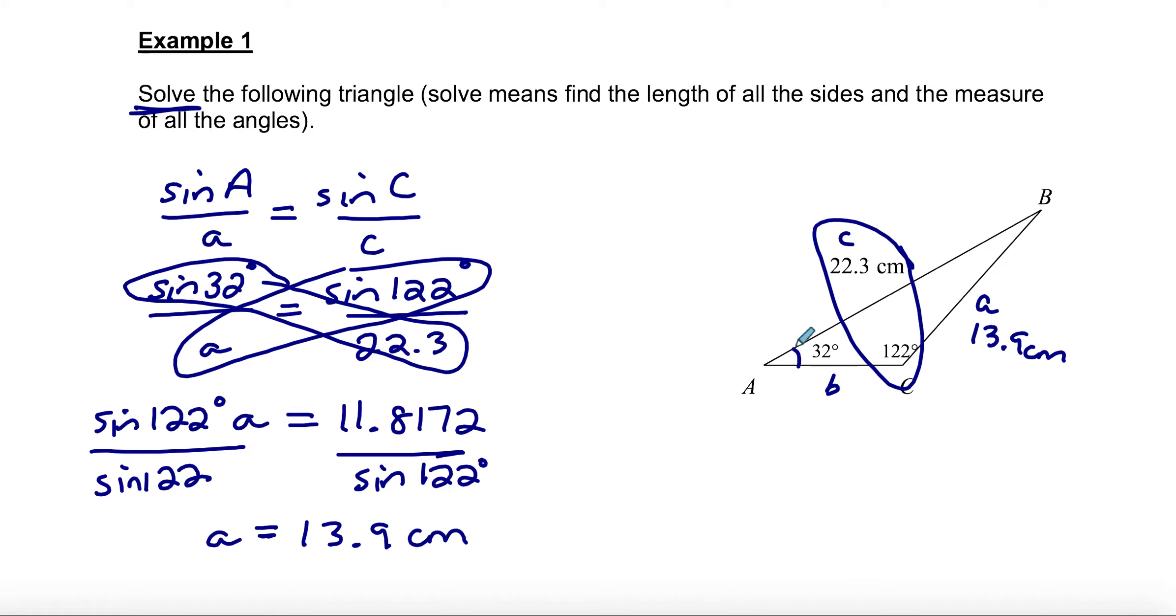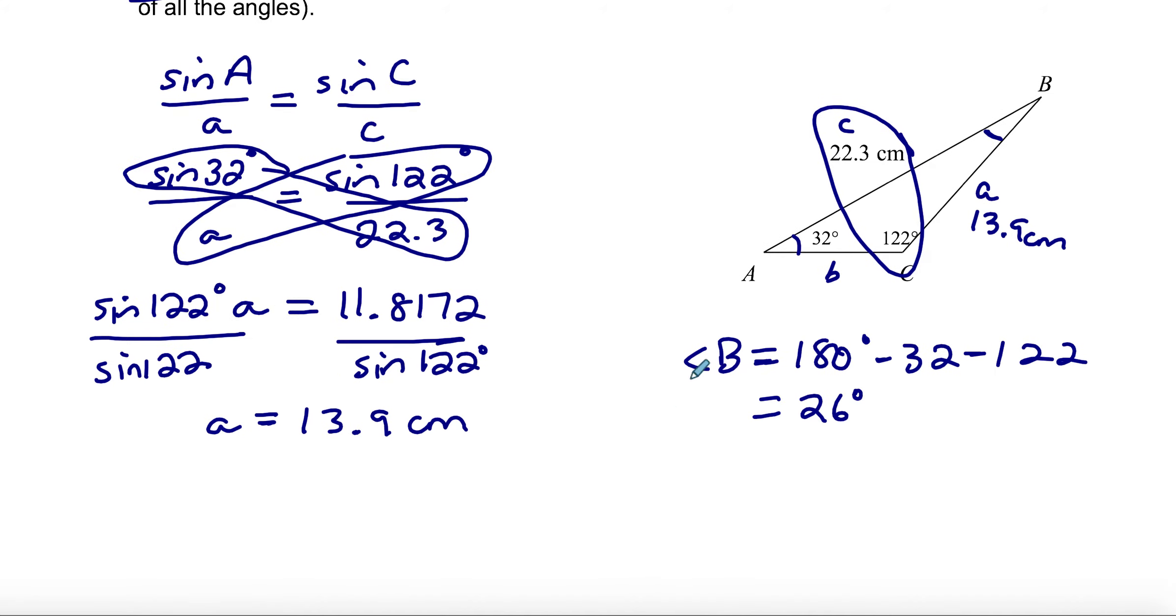Something else we could find: if we know two angles, it'd be really easy to find angle B. So angle B is going to be 180, because they all add up to 180, minus 32, minus 122. So angle B is 26 degrees.